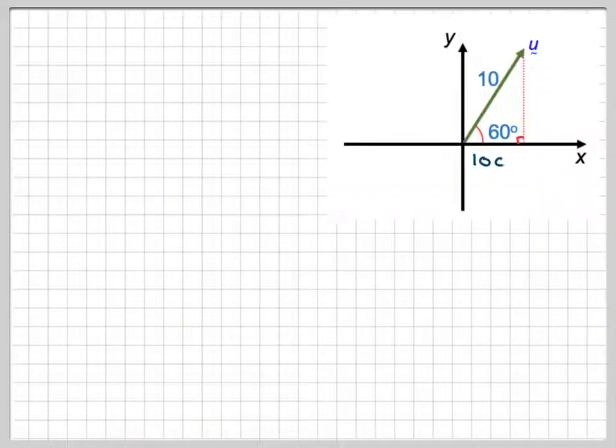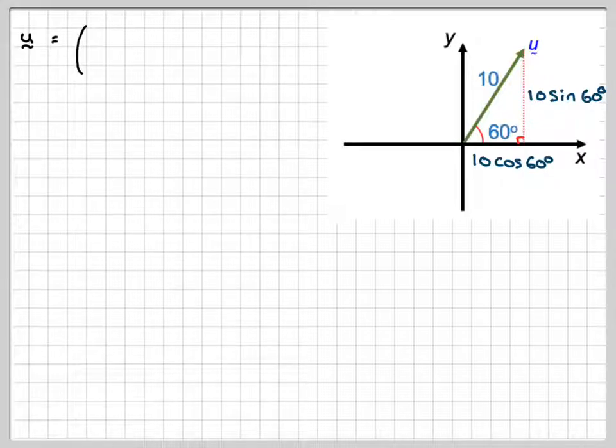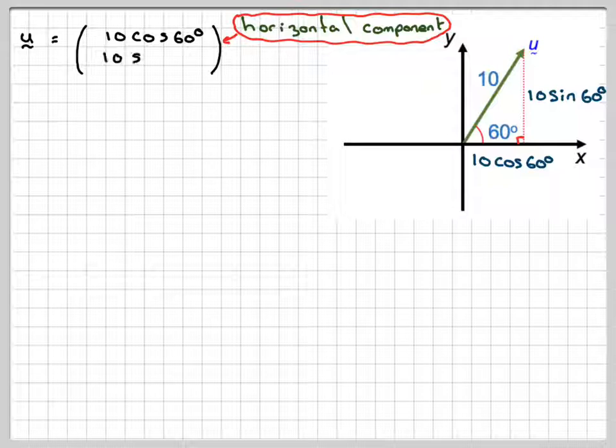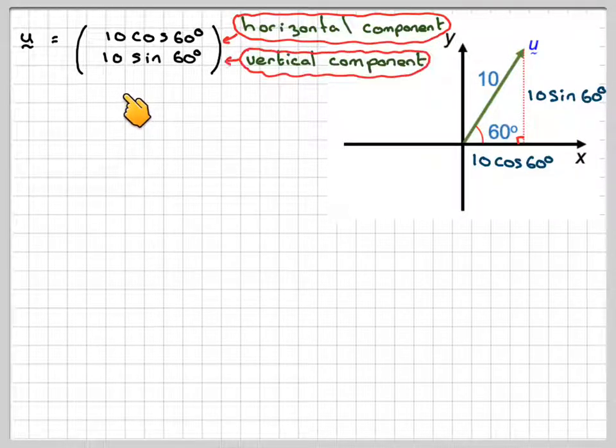So writing that out again. So u, the vector u, will be equal to the horizontal component, which is 10 cos 60. That's called the horizontal component. And then we write it as a column vector. So the vertical component will be this one here, 10 sine 60. So it's along the corridor up the stairs, same idea. This one first, this one second.